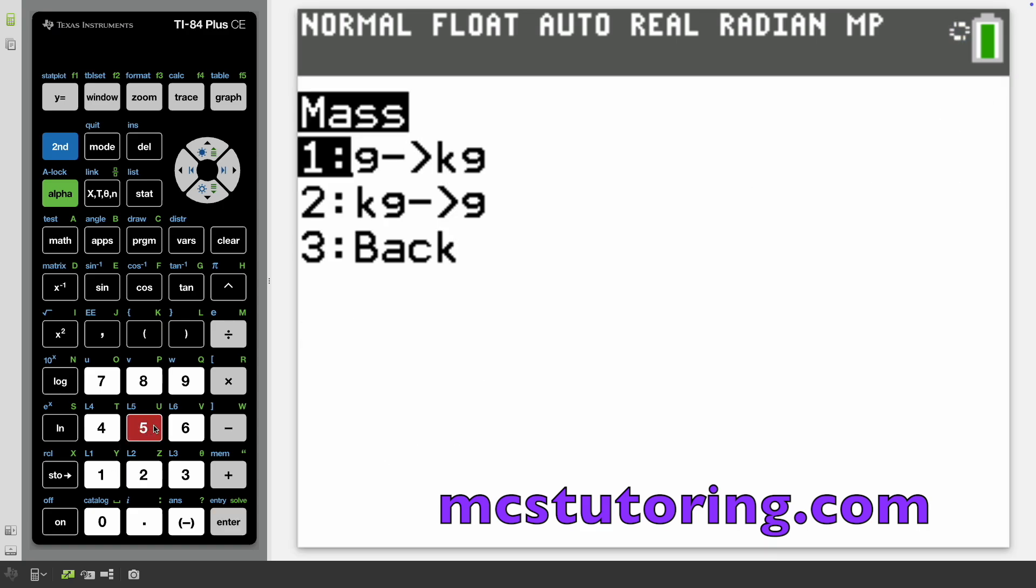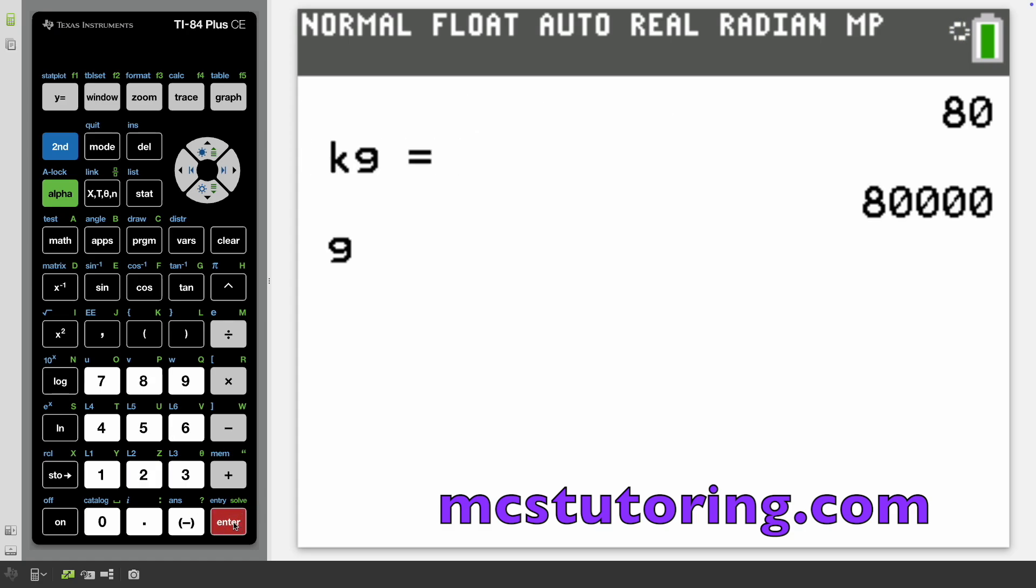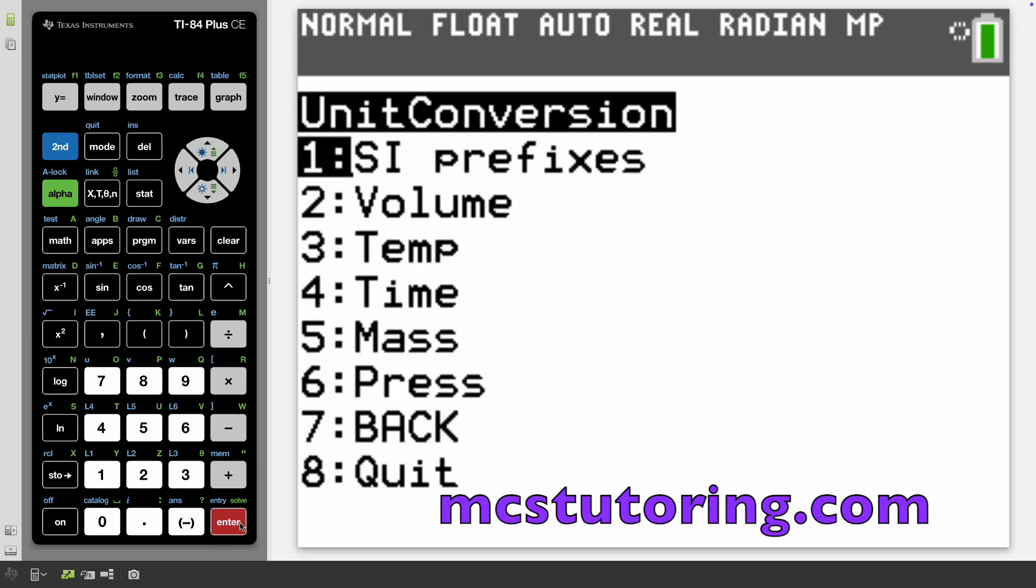Let's go mass. Gram to kg, kg to gram. You could do this in the SI unit converter. Let's do kg to gram. I think I weighed at some point 80 kgs. So that's 80,000 grams.